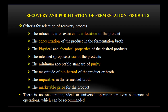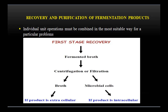There is no one unique, ideal, or universal operation or sequence of operations that can be recommended. Individual unit operations must be combined in the most suitable way for the particular problem. This chart shows the first recovery steps. Once the fermentation process is over, the fermented broth is collected. It is then centrifuged or filtered, depending upon whether the product is intracellular or extracellular. Solid and liquid are separated, and depending upon the product, the particular part is further processed for purification.